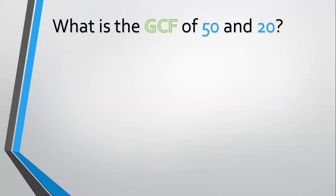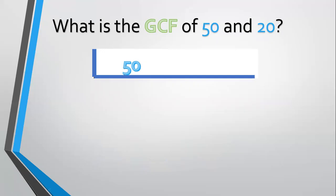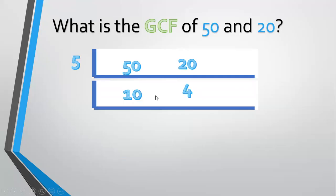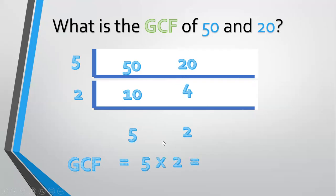What is the GCF of 50 and 20? Align 50 and 20. Divide by a prime common factor, 5. 50 divided by 5 equals 10. 20 divided by 5 equals 4. Divide again by a prime common factor, 2. 10 divided by 2 equals 5. 4 divided by 2 equals 2. 5 and 2 have no prime common factor, so stop. GCF equals 5 times 2 equals 10.